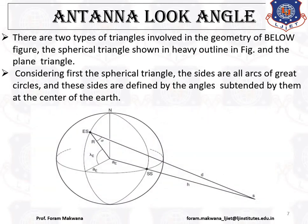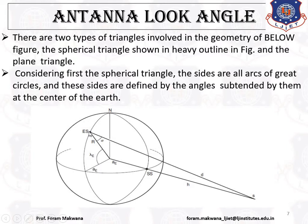Now we are going to calculate the azimuth angle. From this geometry, this is our earth with the north pole, south pole, east and west sides, and the equator. ES represents the earth station, SS represents the subsatellite point, and this is the satellite. The vertical projection of the satellite onto the surface of the earth is called the subsatellite point. The distance between satellite and the subsatellite point defines the height of the orbit. The distance between the earth station and the satellite is represented as distance d.